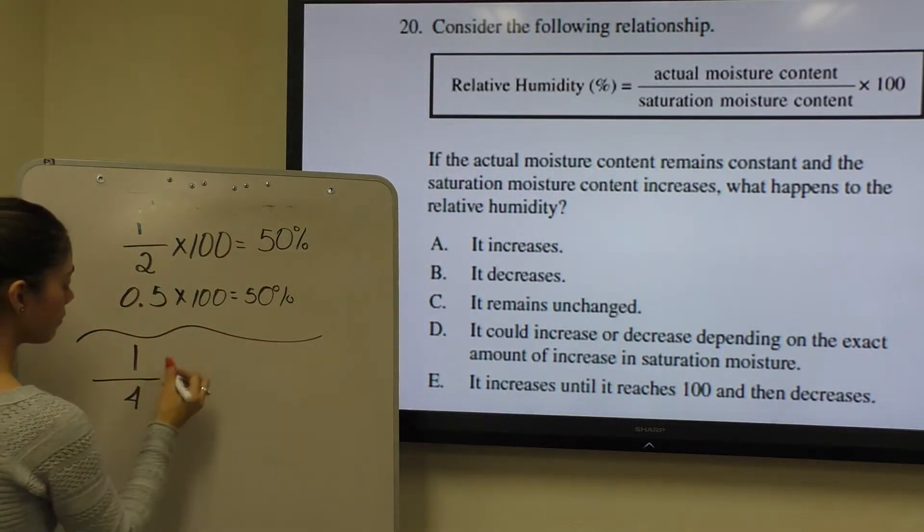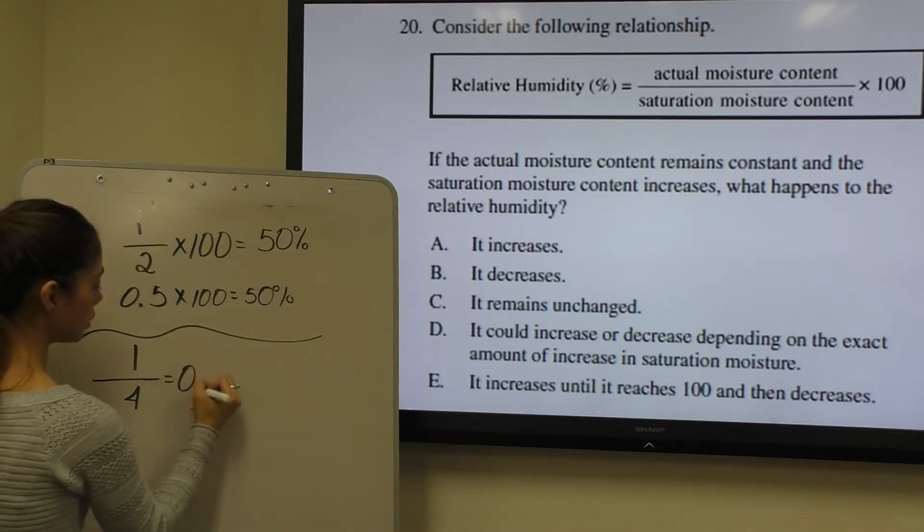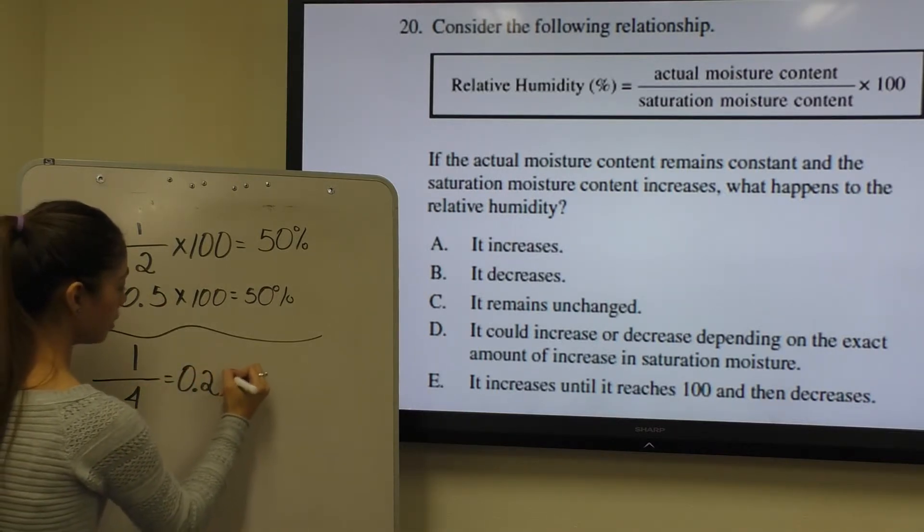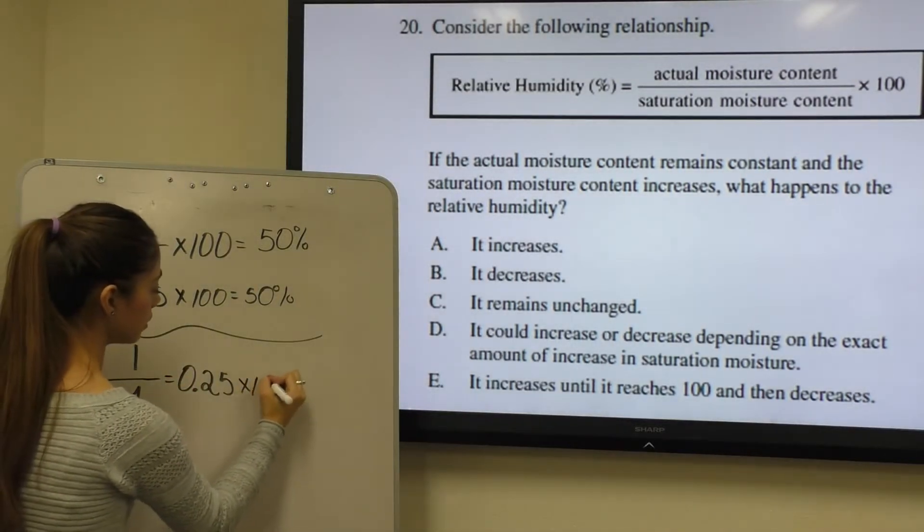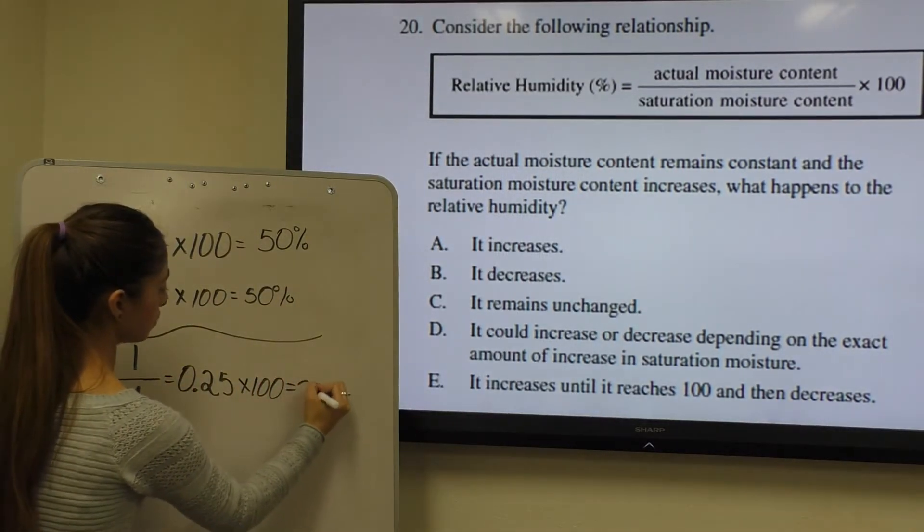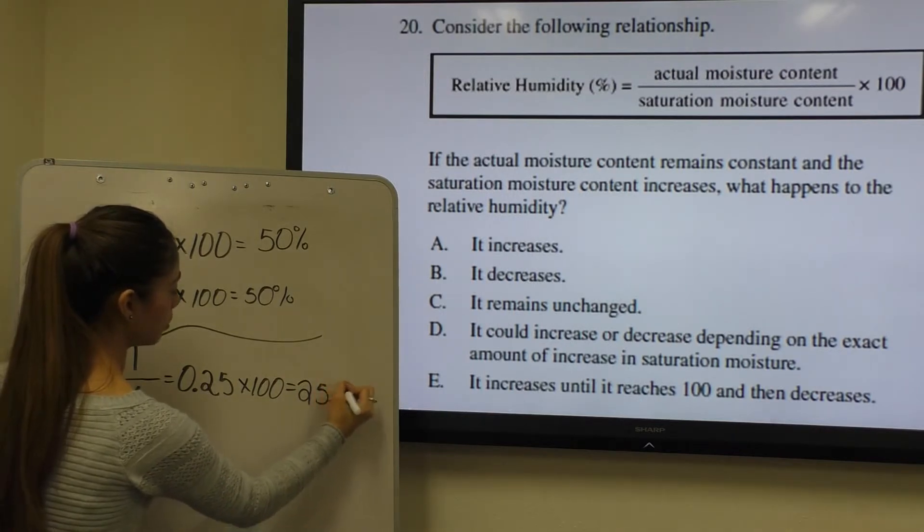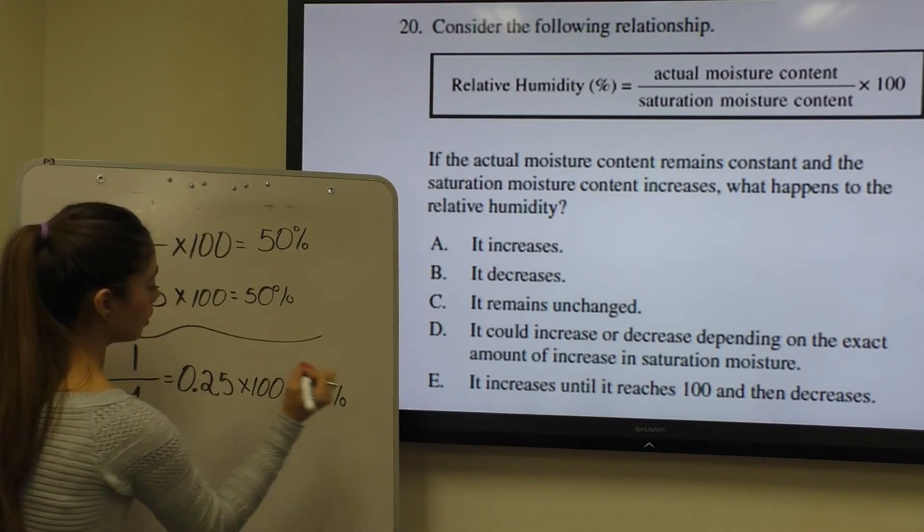Well, 1 divided by 4 is equal to 0.25. And to get it to be a percent, they multiply by 100, which gives us 25%. So as you can see,